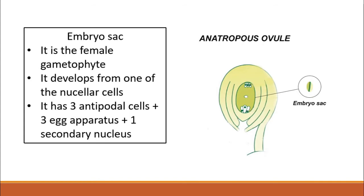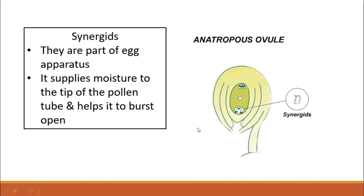The embryo sac lies in the center of the ovule and is the female gametophyte. It develops from one of the nucellus cells. The embryo sac has a total of seven cells: three antipodal cells, three cells of the egg apparatus, and one secondary nucleus — making 3 + 3 + 1 = 7 cells.